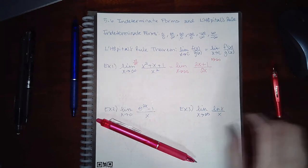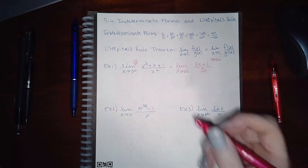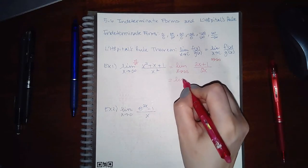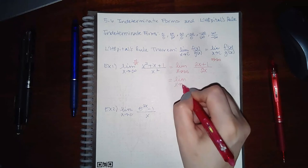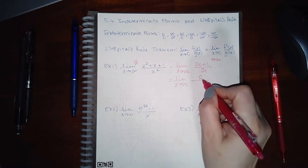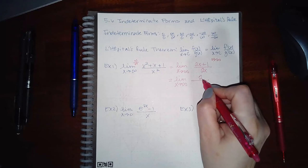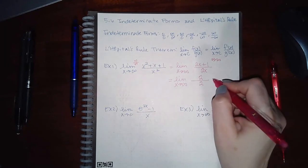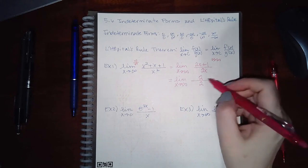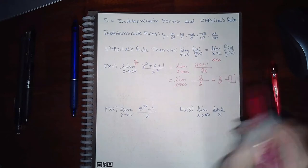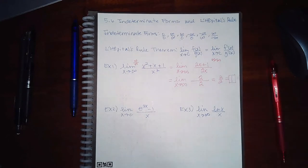Since we still have an indeterminate form, we apply L'Hopital's Rule again. The derivative of 2x + 1 is 2, and the derivative of 2x is 2, which is just a constant. So we get 2 over 2, which is 1. The limit is therefore 1.